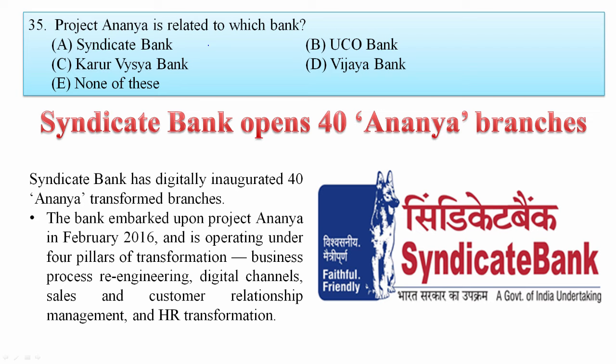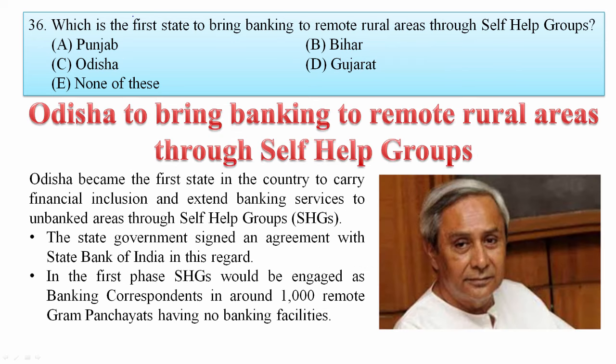Project Ananya is related to which bank? Syndicate Bank opened 40 new Ananya branches. Your answer is Syndicate Bank. Which is the first state to bring banking to remote rural areas through self-help groups? Odisha became the first state to carry out financial inclusion and extend banking services to unbanked areas through self-help groups, providing banking facilities to rural areas. Your answer is Odisha.